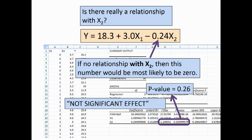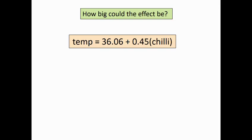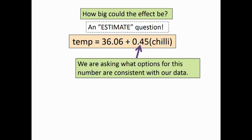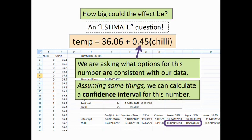Next question: how big could the effect be? That's a what's-the-number question. So there must be a confidence interval somewhere — options for that number consistent with our data. Assuming certain things, we calculate a confidence interval, and there it is in the output: anything between 0.38 and 0.52. Lovely.